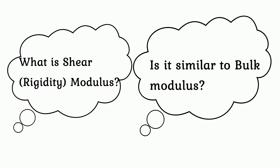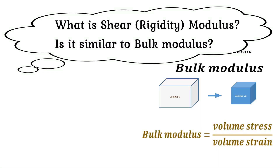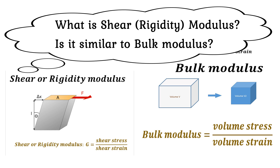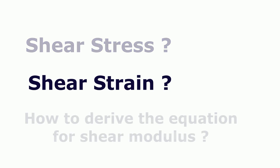Shear modulus, also known as rigidity modulus, is similar to bulk modulus. The difference is that bulk modulus equals volume stress divided by volume strain, whereas shear modulus equals shear stress divided by shear strain. The shear modulus is denoted by capital G and describes the material's response to shear stress. We will explain shear stress, shear strain, and how to derive the equation for rigidity modulus.